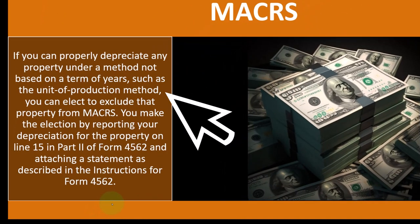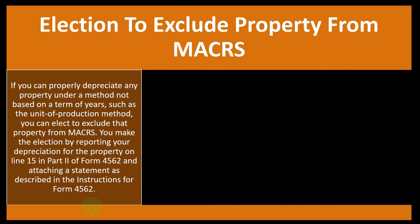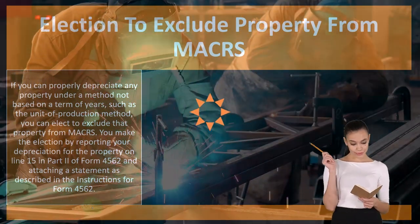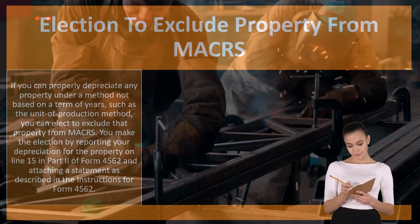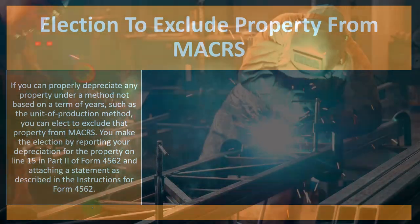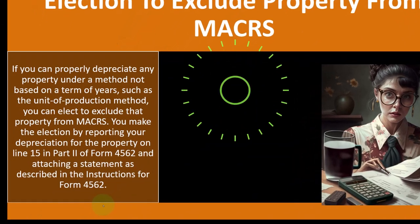If you can properly depreciate any property under a method not based on a term of years, such as the unit of production method, you can elect to exclude that property from MACRS. The unit of production method ties depreciation to your production — for example, a printer's depreciation tied not to how old it is but how many pages it has printed. You make the election by reporting your depreciation on line 15 in Part Two of Form 4562 and attaching a statement as described in the instructions for Form 4562.